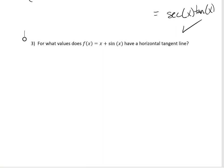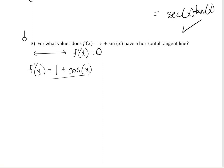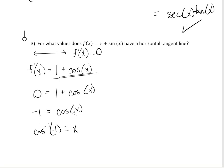The next problem asks: for what values does f of x equals x plus sine of x have a horizontal tangent line? A horizontal tangent line means we're looking for peaks and valleys where the slope is 0. First, find the derivative: the derivative of x is 1, and the derivative of sine is cosine, so f prime of x equals 1 plus cosine x. Setting this equal to 0 gives negative 1 equals cosine of x. Taking cosine inverse of both sides gives x equals pi.